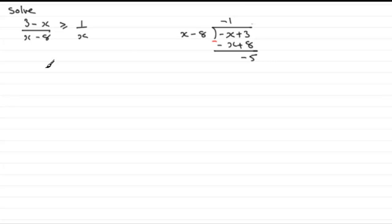So I can write the left-hand side as minus 1. So we get therefore minus 1 and then the remainder minus 5 over the divisor x minus 8. And that has got to equal, in this case, greater than or equal to 1 over x.